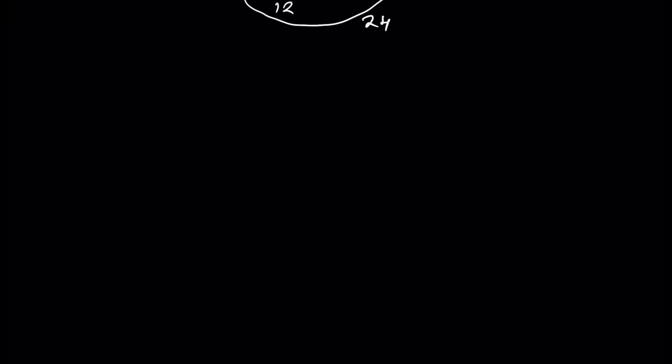Next, let's have an example of division. 28 divided by 7, which is equal to 4. In this case, the quotient 4 is a whole number. And sometimes the quotient is not a whole number.